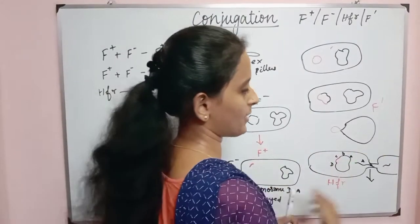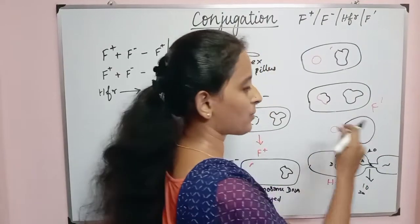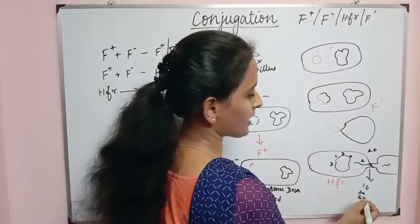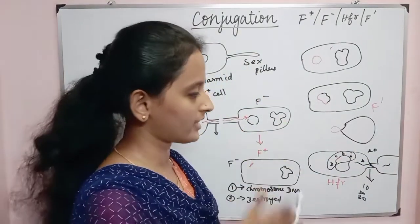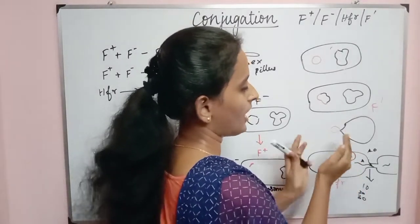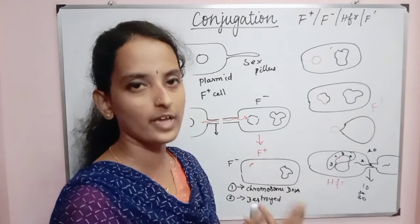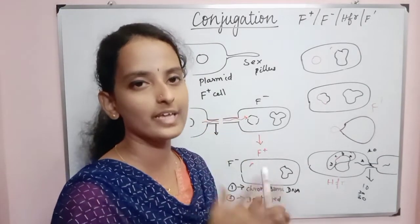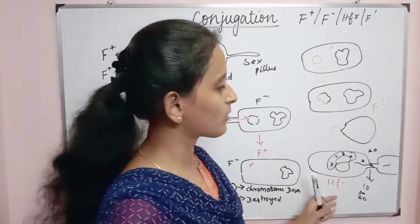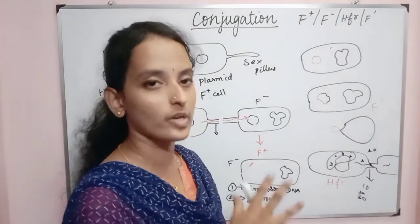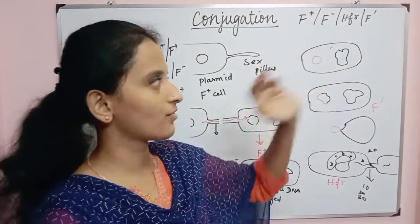In 10 minutes, if we disturb the process, only the AB portion will be transferred. In 20 minutes, ABC will be transferred. In 30 minutes, half the chromosome is transferred. By disrupting the conjugation at specific time durations, we can identify specific genes being transferred at each time point. This allows us to map the chromosome sequence based on protein synthesis patterns. So this is the conjugation: F+, F-, HFR, and F' factors.